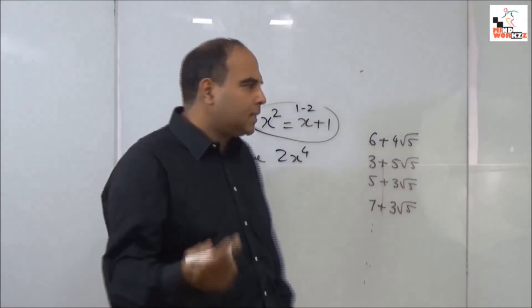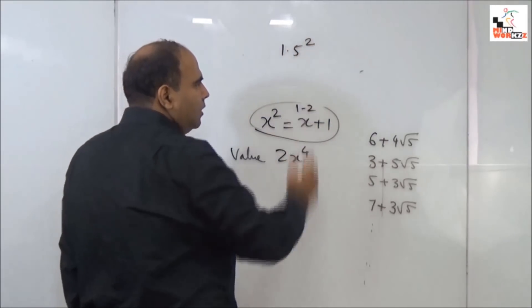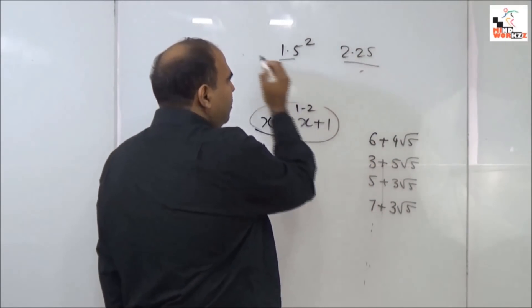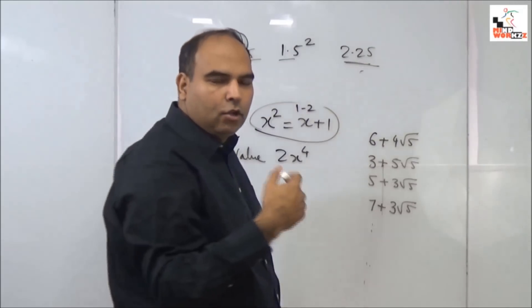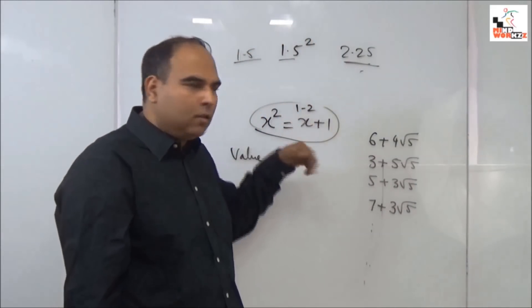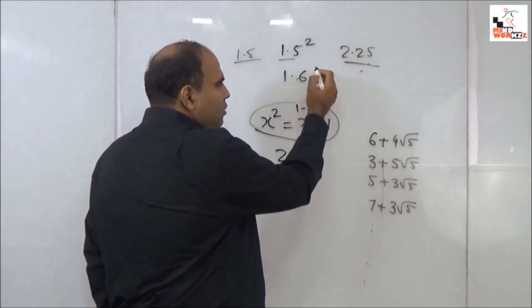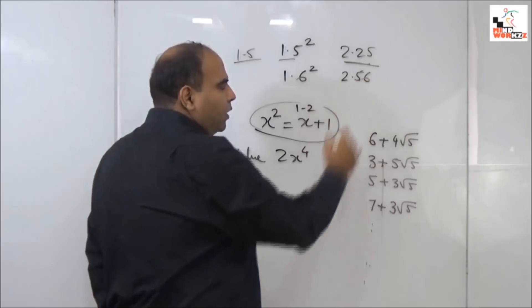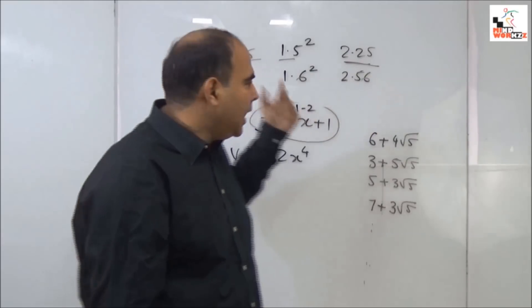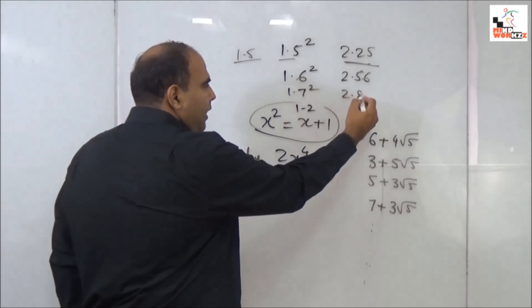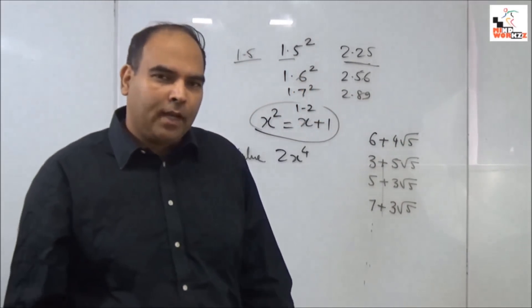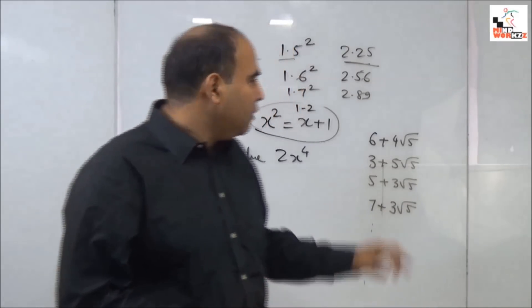When I see that, I start experimenting with my squares. 1.5² = 2.25, giving a growth of 0.75. 1.6² = 2.56, giving a growth of 0.96. And 1.7² = 2.89, giving a growth of 1.19, which is too large.